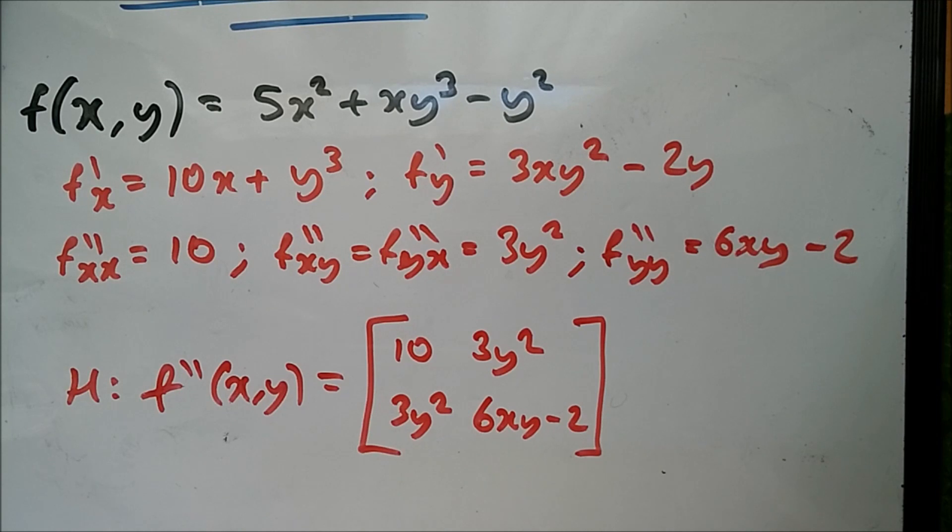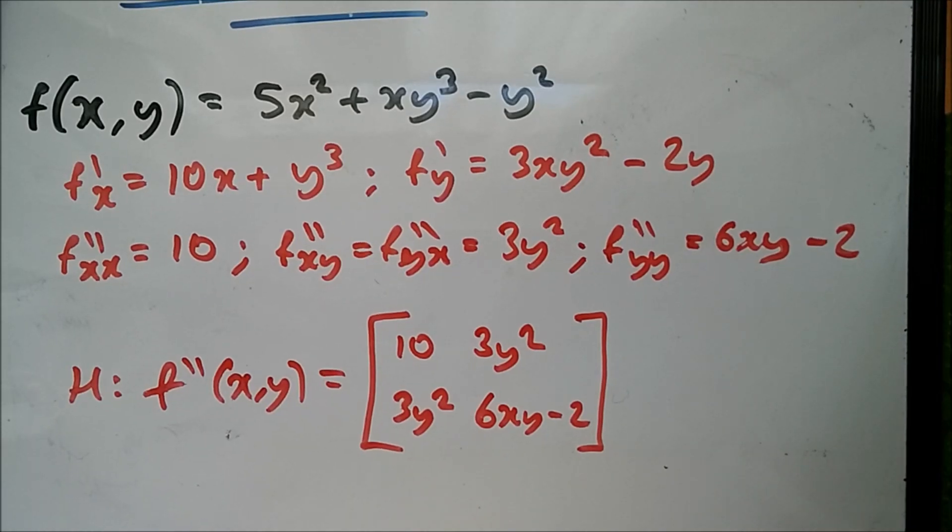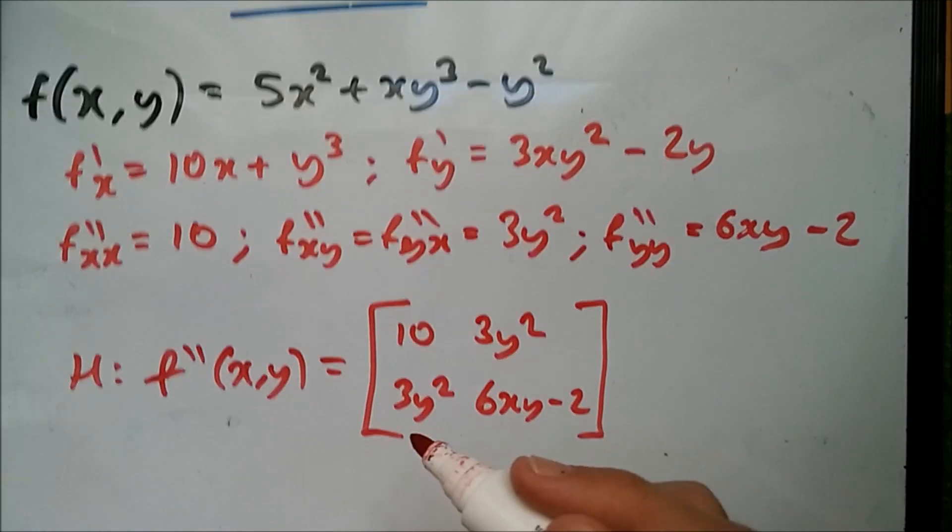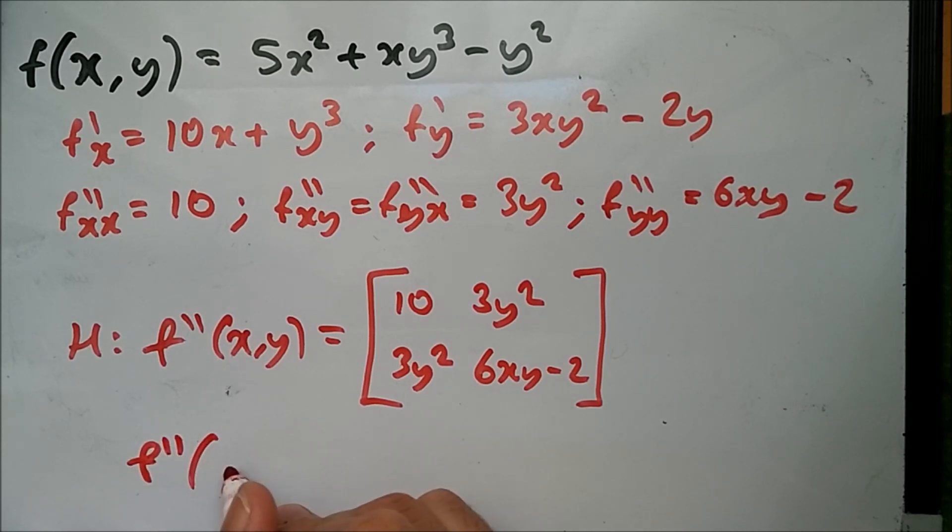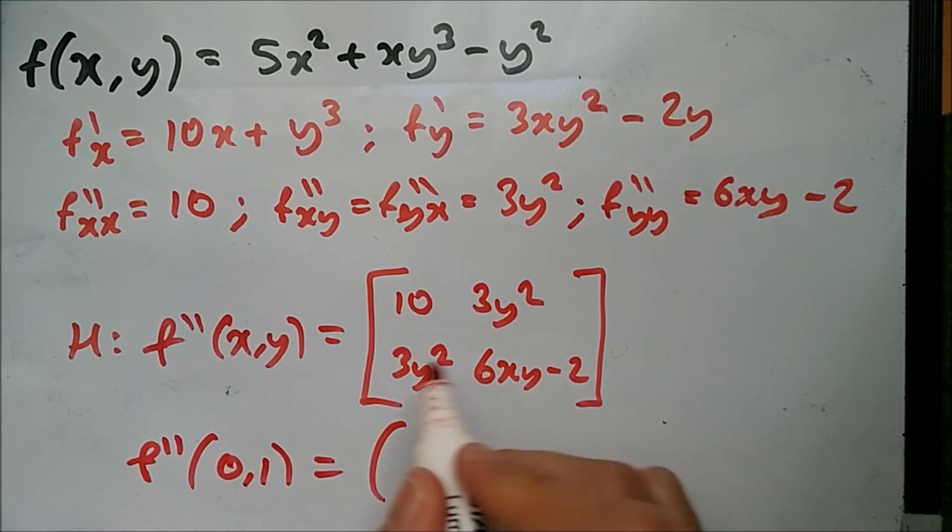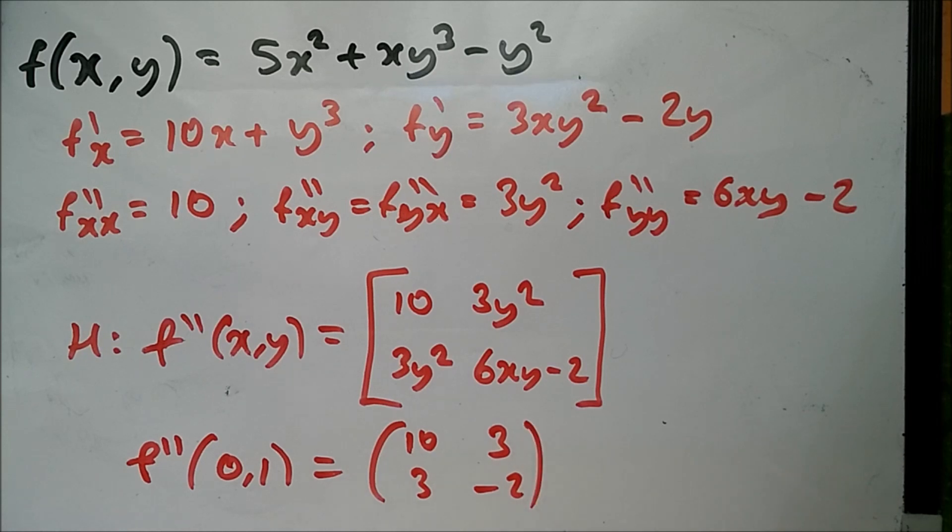Normally at this point we would substitute values. For example, they might ask you to compute the Hessian matrix at a point, let's say (0,1). Replacing x with 0 and y with 1, we get 10, 3, 3, -2. Hope this helps, and if you need any more questions please let me know.